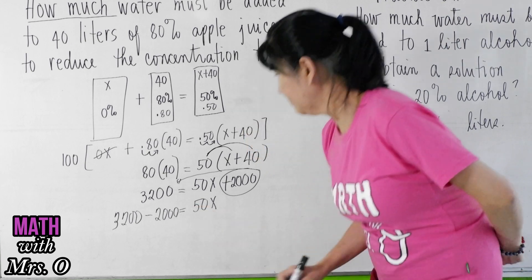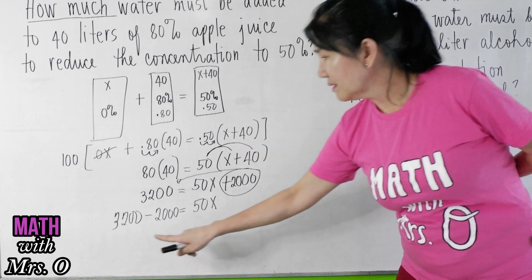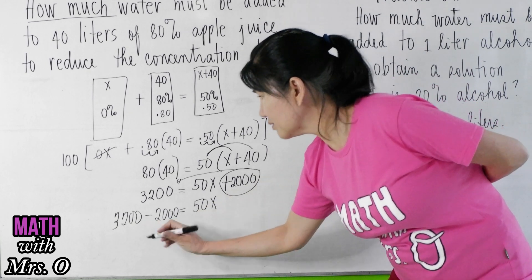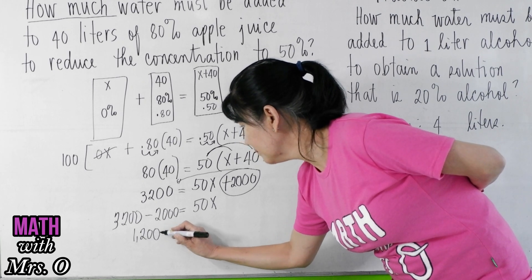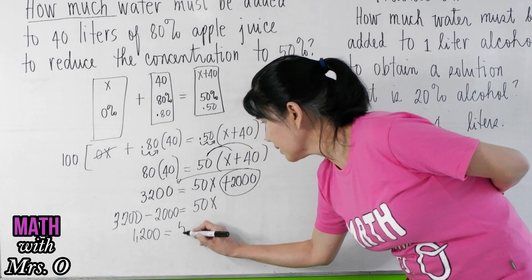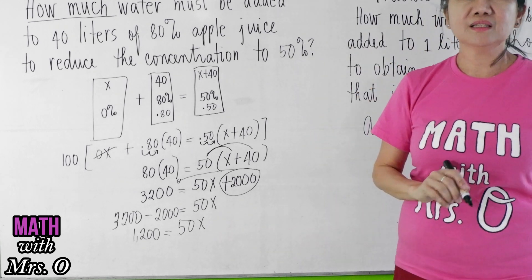So we will be having here 3200 minus 2000... 1000 there. Did you get it? 3200 minus 2000 is now 1200, is equal to 50x.